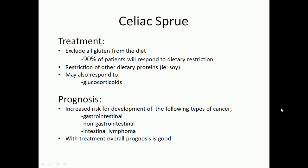For the treatment of celiac sprue, exclusion of gluten from the diet is primary, and 90% of patients will respond to this dietary restriction. Restriction of other dietary proteins such as soy may also help, and patients may respond to glucocorticoids. For prognosis, there is an increased risk for development of gastrointestinal, non-gastrointestinal, and intestinal lymphoma cancers. With treatment, the overall prognosis of celiac sprue is good.